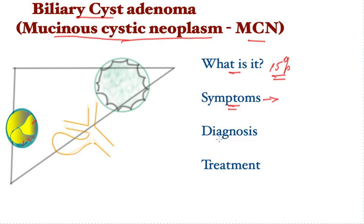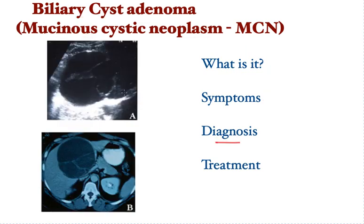How do we diagnose a biliary cyst adenoma? That is done through scans — here you can see an ultrasound scan showing features of a cyst in the liver with thick walls and projections. A CT scan confirms the same diagnosis. These features are concerning for biliary cyst adenoma.